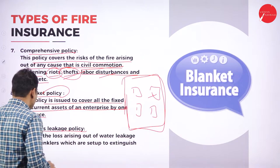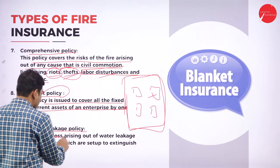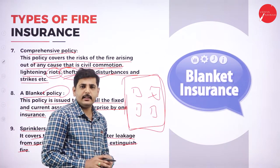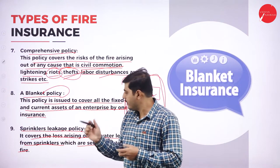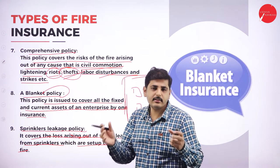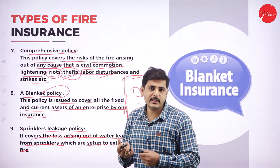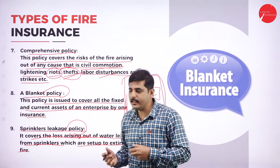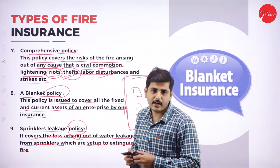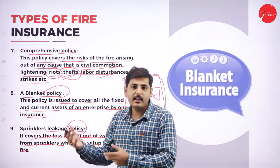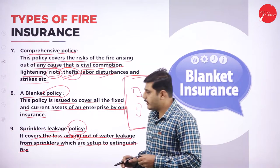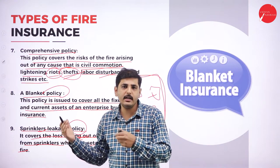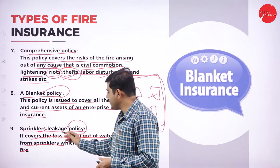Sprinkler leakage policy covers losses arising out of water leakage from sprinklers set up to extinguish fire. After a fire accident, all sprinklers open and sprinkle water. The fire insurance covers damage by fire, but whatever damage happens by the sprinkler water — for example to expensive machinery like computers or delicate machines — can be covered under this sprinkler leakage policy. Every business will have sprinkler connections for all parts of the building, and if any damage happens to delicate machines because of water from sprinklers, this policy helps.